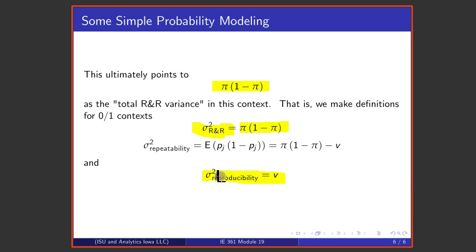The reproducibility is the variance of the distribution of the probabilities as one looks across operators of calling a part non-conforming, and the difference is what we're going to call the repeatability variance.